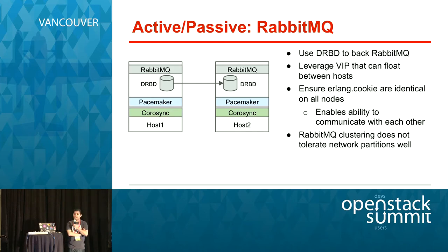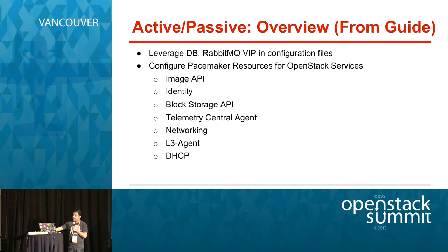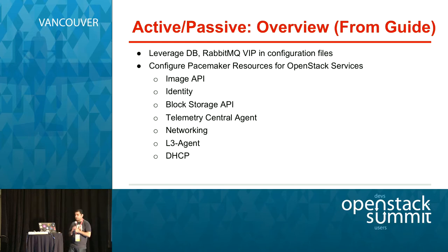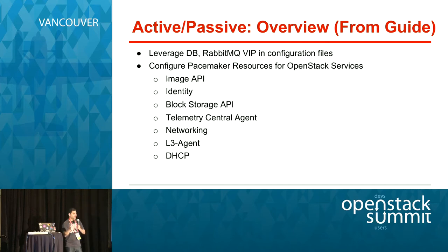For message queue services, the design is similar — relying on DRBD to provide the same services as the SQL database. From the guide, active-passive uses virtual IP interfaces leveraged by all services, with virtual IP addresses in configuration files and Pacemaker resources configured for all entities. In large-scale deployments and in reality, some of these things differ from how the guide describes them. The world doesn't work as pure active-active or pure active-passive. Most clouds use some components in active-active, some in active-passive — the blending of the two is what reality really is.